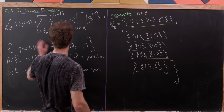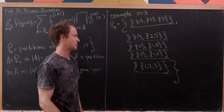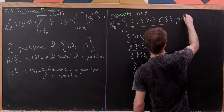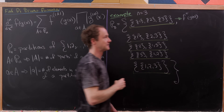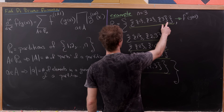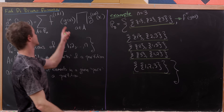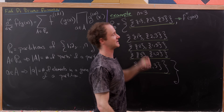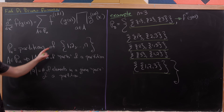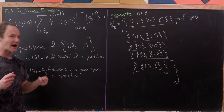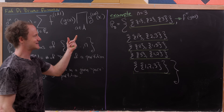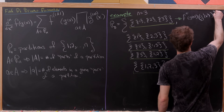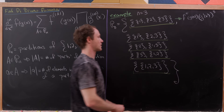Now let's apply the formula to these partitions. For the third derivative of f∘g, the first partition {1},{2},{3} has three parts, so we get the third derivative of f evaluated at g(x). Taking the product over the three singleton elements, each gives a first derivative of g, so together that's g′(x)³.